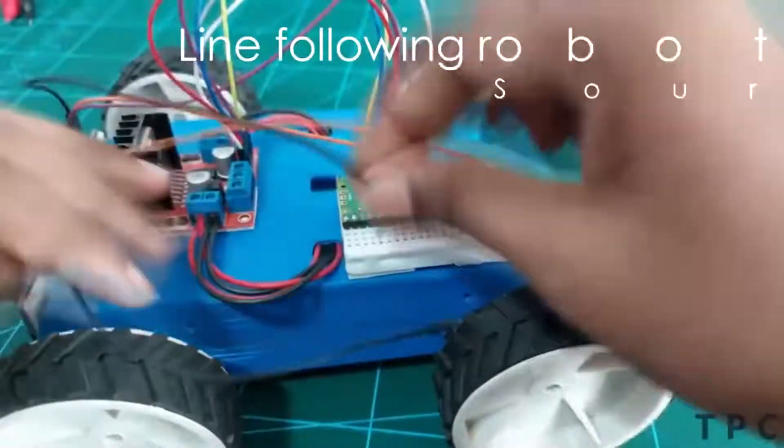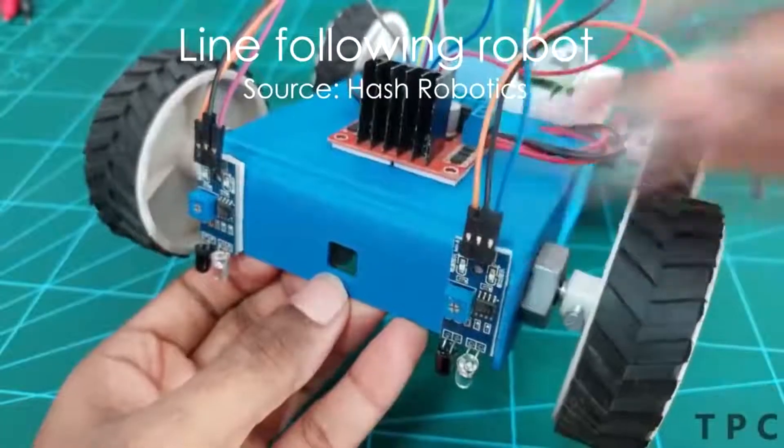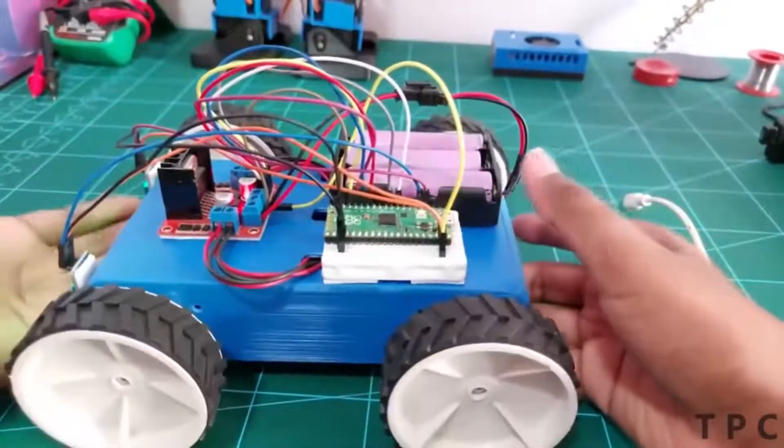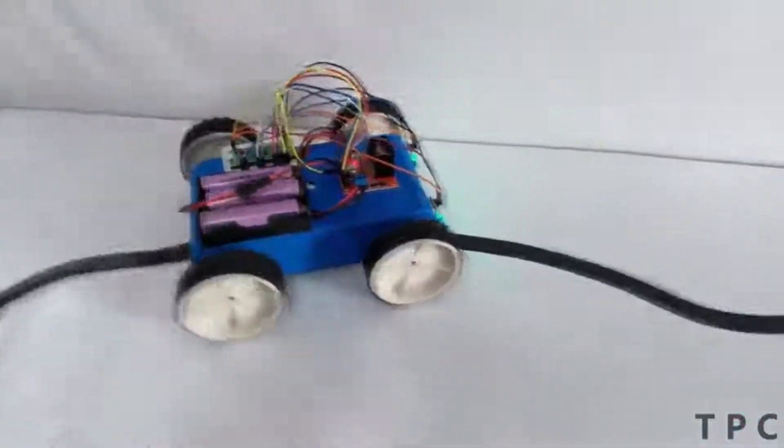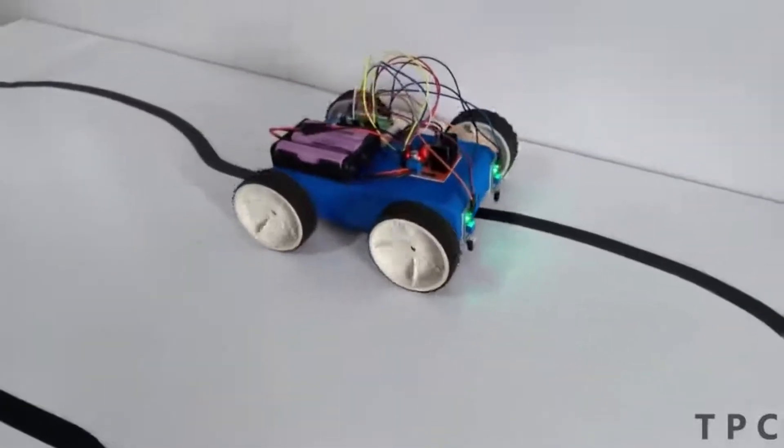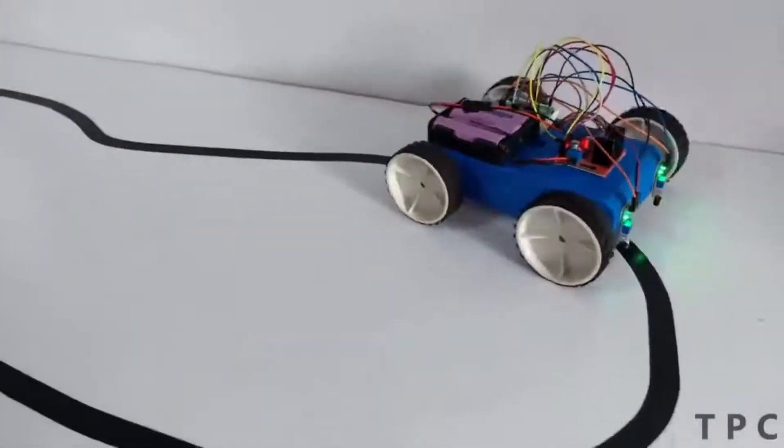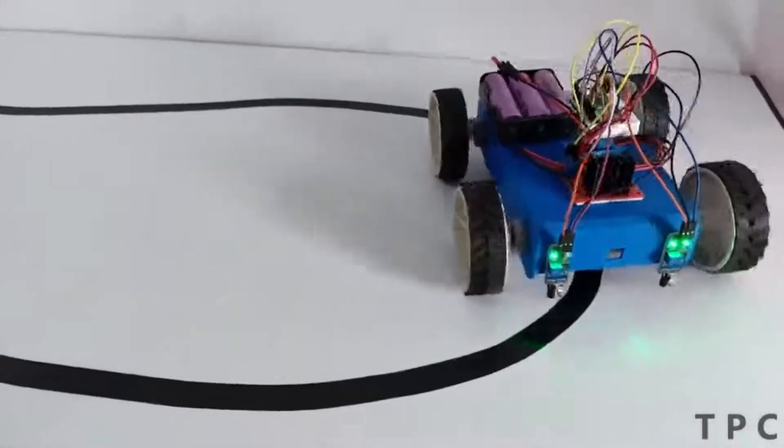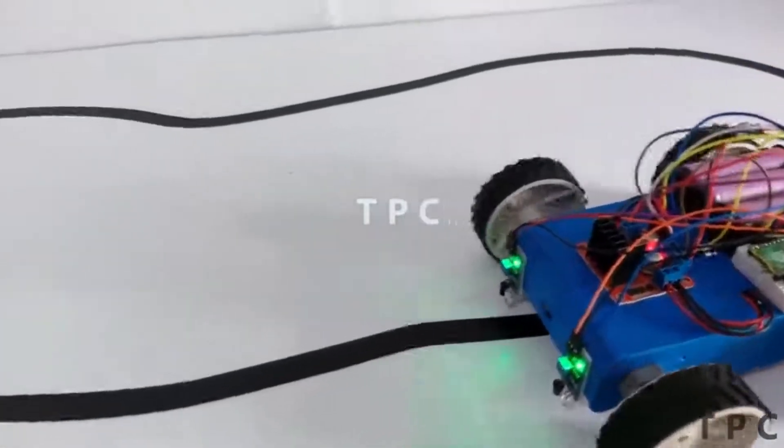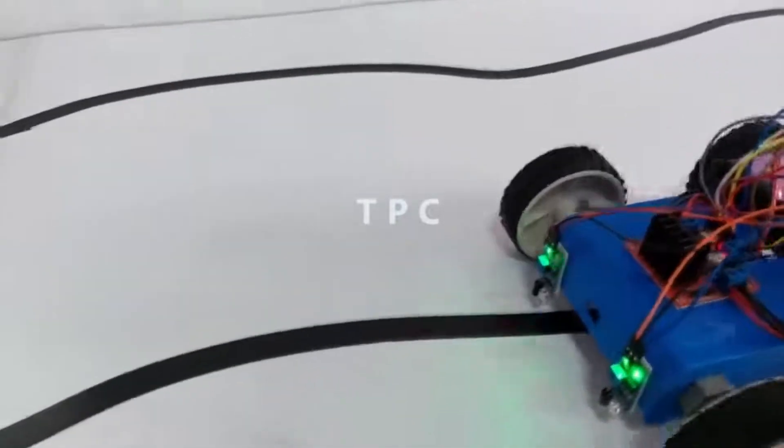This robot detects and follows the course of a black line. Wondering how it works? The robot uses infrared sensors placed at the front of the robot. An IR sensor emits infrared rays on the surface while an IR detector picks up the reflected waves. The intensity of the received light varies according to the surface, which means that a light surface reflects more waves than a black surface.